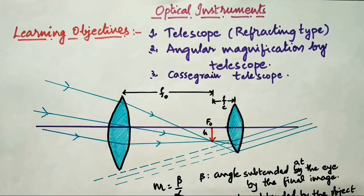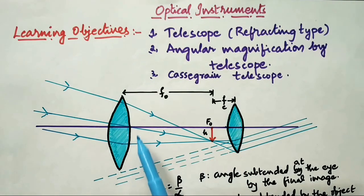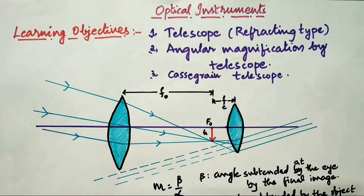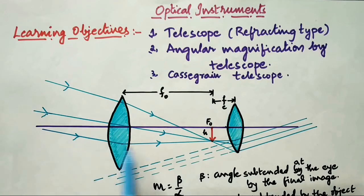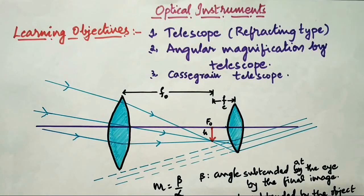Astronomical telescopes are used to view distant objects such as planets in our solar system. A telescope basically has an objective and an eyepiece, as we have in a compound microscope, but here the objective has a large focal length and a much larger aperture than the eyepiece. Light from distant objects such as the moon enters the objective first and forms a real image at the focus of the objective lens.